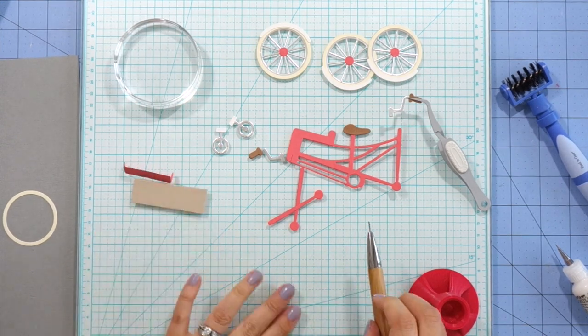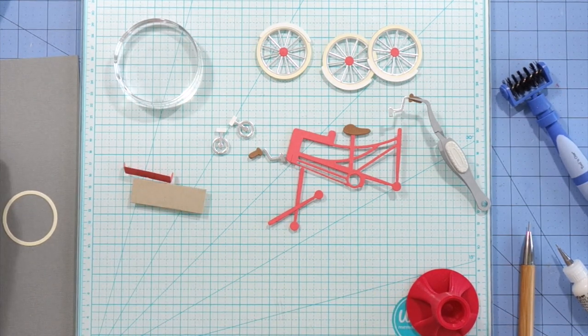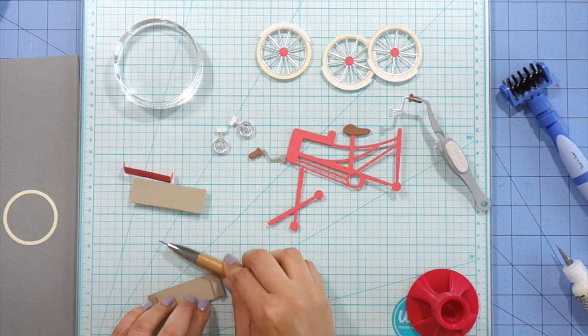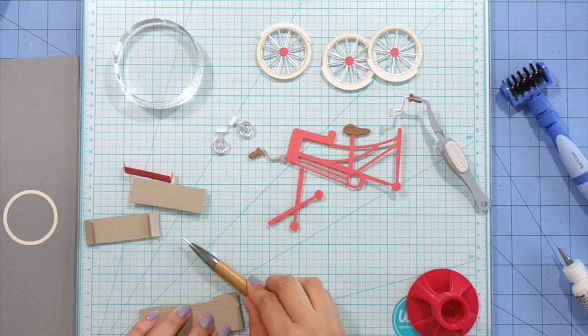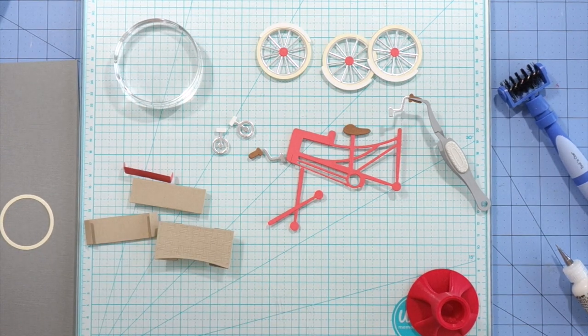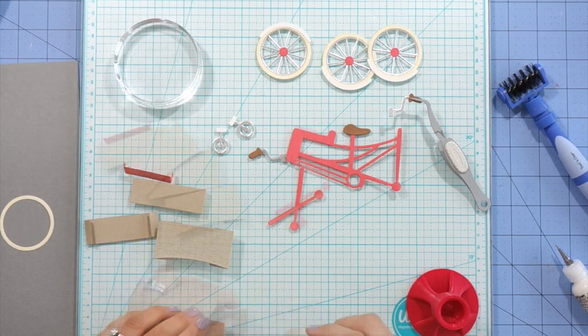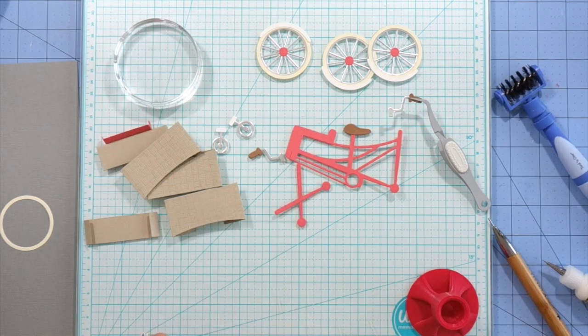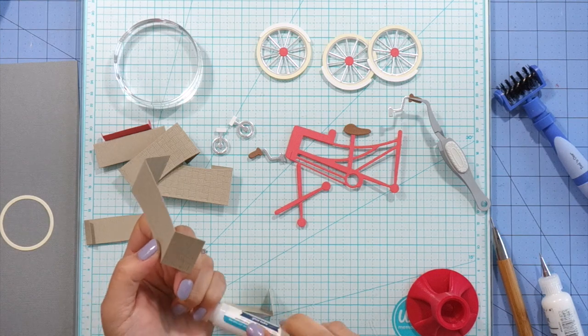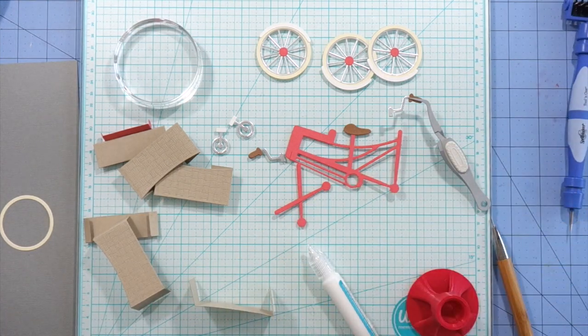I'm going to be working on putting my baskets together. These pieces that I'm working on right now are actually for the bottom of the basket and there are two score lines. These textured pieces are for the sides of the basket and there are two score lines on those as well.